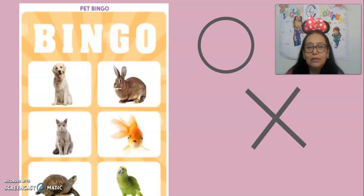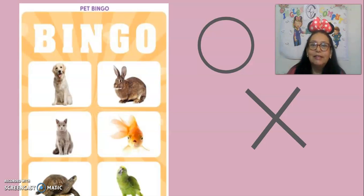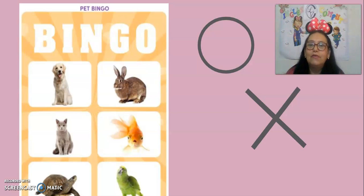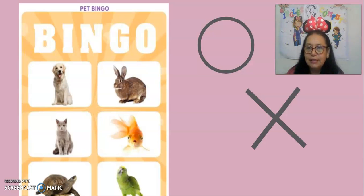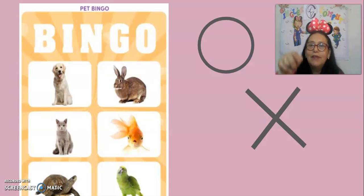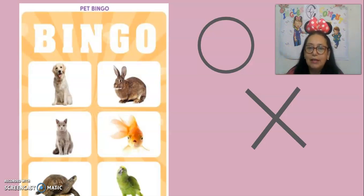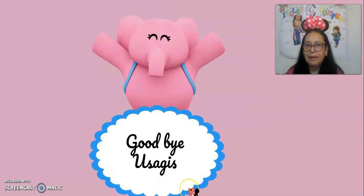Cross out the parrot with color green. One more time: circle the dog with color red, circle the fish with color blue, circle the turtle with color green. Cross out the rabbit with color yellow, cross out the cat with color red, cross out the parrot with color green.